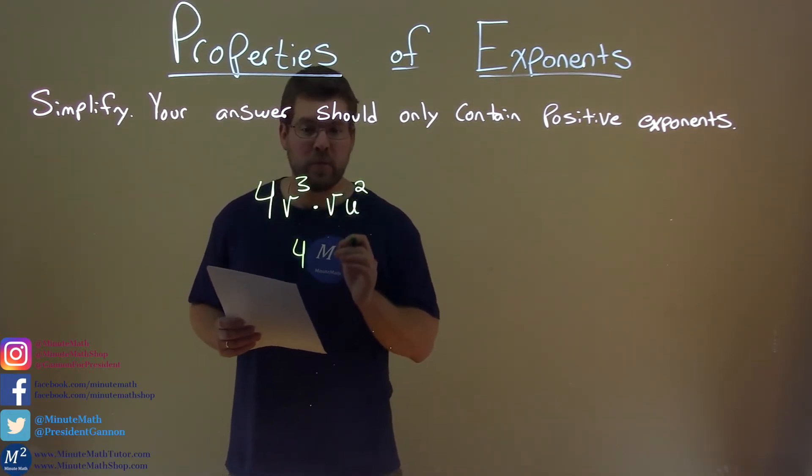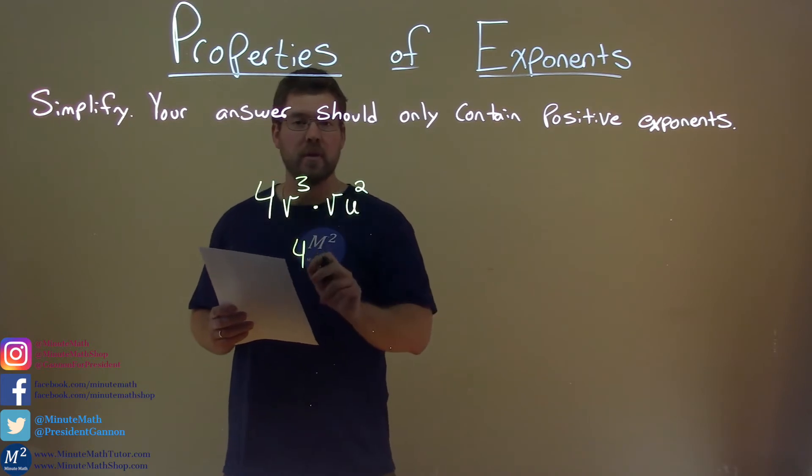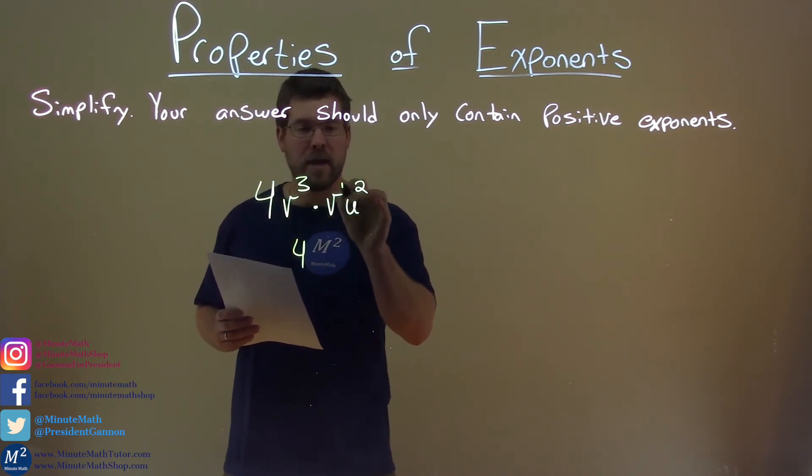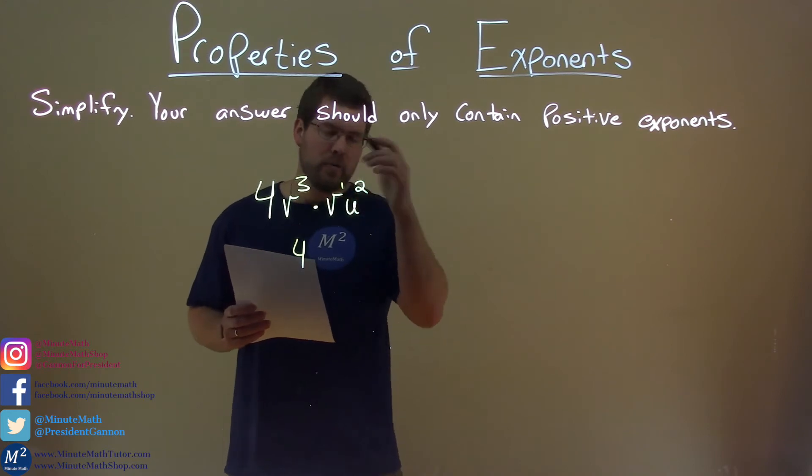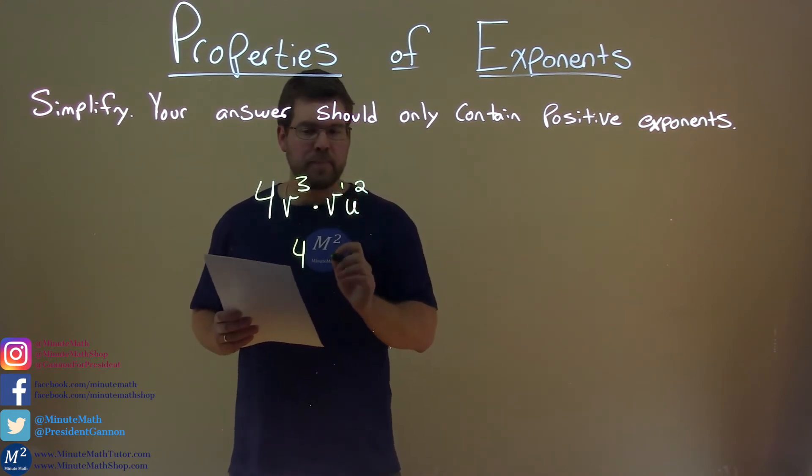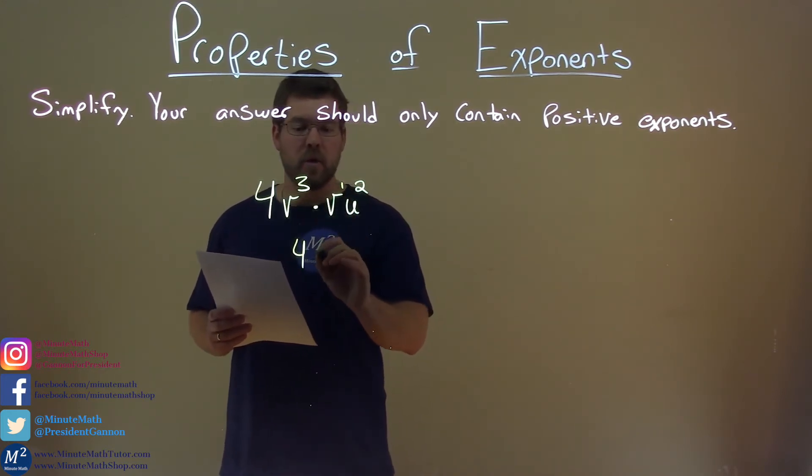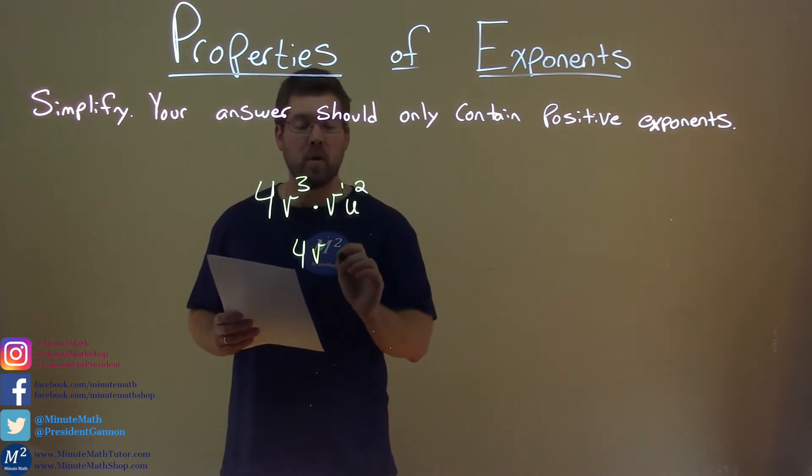So, now let's deal with the v's. v to the third power times v to the first power, remember that's imaginary right there, or we don't really write it, but there's a first power there. We add the exponents. So, we have v to the 3 plus 1, which is 4.